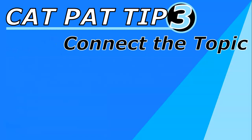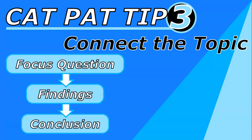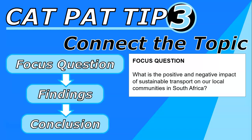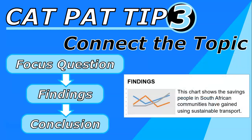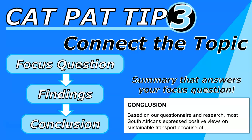CAT PAT tip number three: make sure that you connect the topic. Your focus question needs to connect to your findings, and your findings need to connect to your conclusion. For example, if your focus question is about the positive and negative impact of sustainable transport on local communities in South Africa, then your findings need to relate to that — focusing on sustainable transport, South African communities, and what they feel. Your conclusion should be a summary that answers your focus question, so I must be able to read your focus question and conclusion together and see exactly how you answered it.